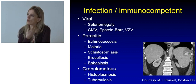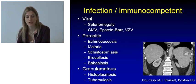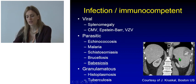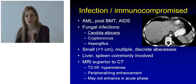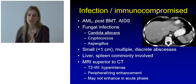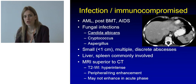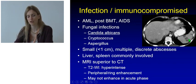The infectious agents responsible for splenic infections differ between immunocompetent and immunodepressed patients. In immunocompetent patients we have viral, parasitic, and granulomatous infections. Here we can see a case of an enlarged spleen with multiple pseudoaneurysms caused by babesiosis. Immunocompromised patients — for example those with leukemia, after bone marrow transplantation, or patients with AIDS — are most commonly prone to fungal infections, typically Candida, Cryptococcus, and Aspergillus. In such cases we have small multiple discrete abscesses, better seen with MRI compared to CT. These lesions may not enhance in the acute phase and must not be mistaken for other kinds of lesions. Here we can see an example of a young patient with leukemia who had liver and splenic abscesses from Candida albicans.